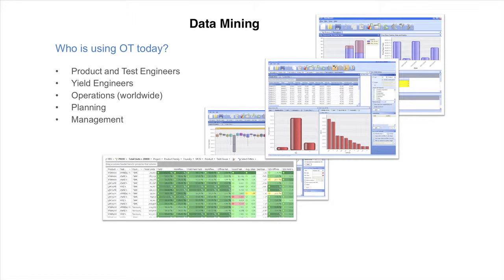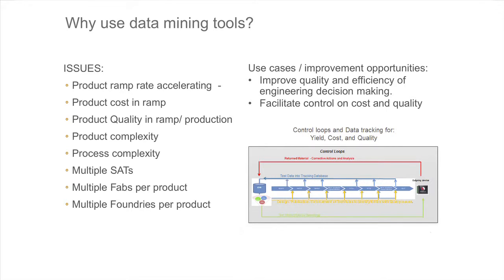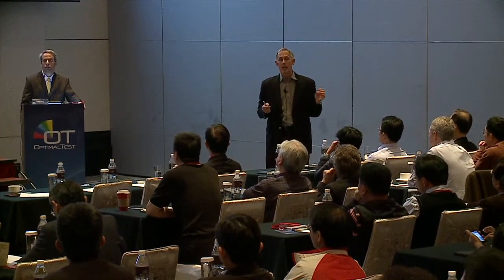So who's using OT today at Qualcomm? A little bit of everybody. It is a massively deployed tool by everybody from operations to engineering. The production ramp is accelerating. The product cost during the ramp is where the biggest savings can be acquired — if you're ramping very fast, every yield point is worth gold. Product quality during the ramp is dangerous. If you have a huge ramp and your product quality is bad, customers will throw you out and won't let you back in. Managing that product quality proactively is critical to success.